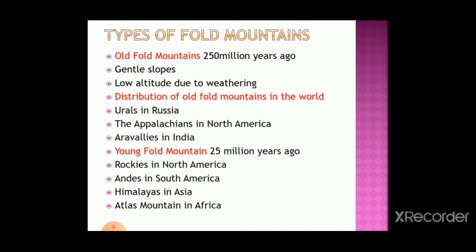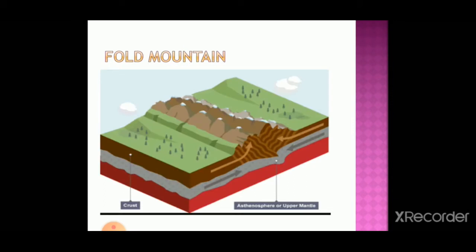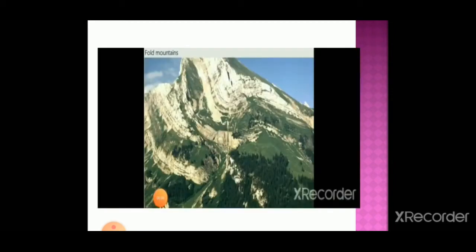Young fold mountains were formed about 25 million years ago — recently in earth's history. Examples include the Rockies in North America, Andes in South America, Himalayas in Asia, and Atlas Mountains in Africa. Most of the mountains with the highest and steepest peaks come under young fold mountains. You can see in a fold mountain diagram that pressure comes from two sides and due to that these folds are formed.